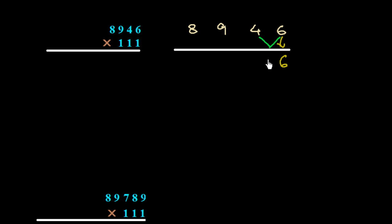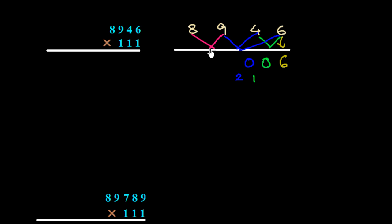Then we add three numbers: 6 plus 4 plus 9 is 19 plus 1 carry is 20 — write 0, carry 2. Then the next three: 9 plus 4 plus 8 is 21 plus 2 carry is 23 — write 3, carry 2.